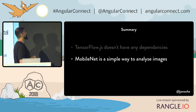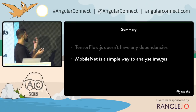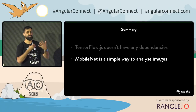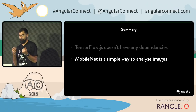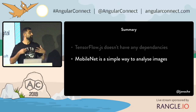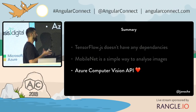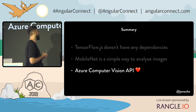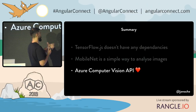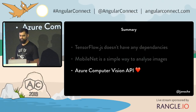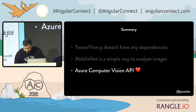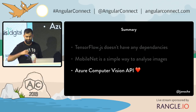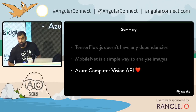If you want to start analysing images, MobileNet is a really simple way to get started — quite impressive in a very short amount of time. But if you really want to analyse images properly, you need to use an API, because the models are really, really large to do it properly. There's the Azure Computer Vision API you can use. I'm going to check my phone — we're good.